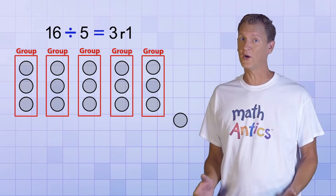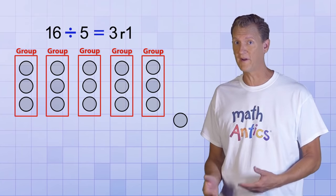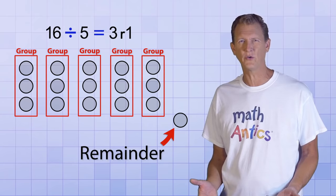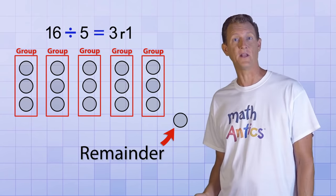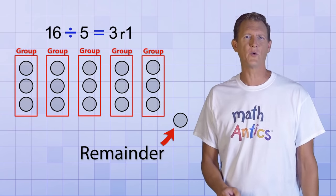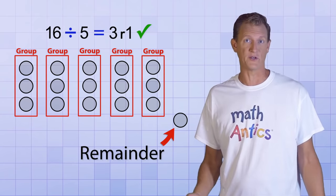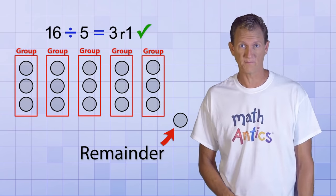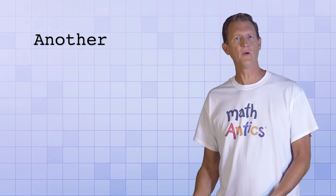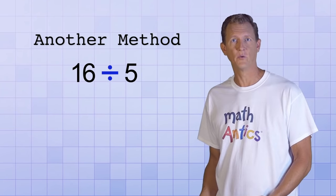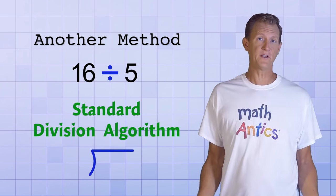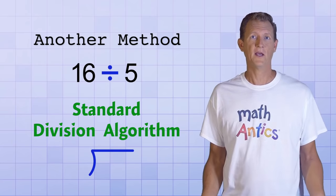That means 16 divided by 5 equals 3 with a remainder of 1. Of course, there are ways to divide up remainders too using decimals, but in this video we are just going to accept remainders in our answers. Another method we could use to calculate 16 divided by 5 would be the standard division algorithm.